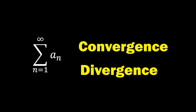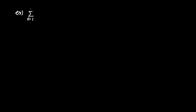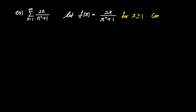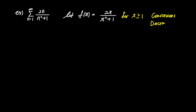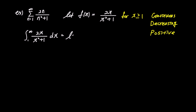Let's delve into examples to understand this better. The first example is the infinite sum of 2n over n squared plus 1. Let's denote f of x as 2x over x squared plus 1. For x greater than or equal to 1, f of x remains continuous since the denominator never becomes 0. Additionally, as the degree of the denominator is greater than that of the numerator, f of x decreases as x increases, and it always takes positive values.